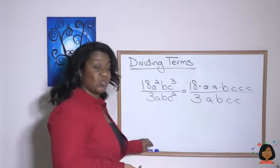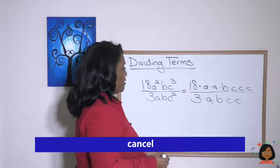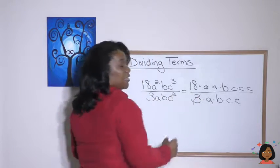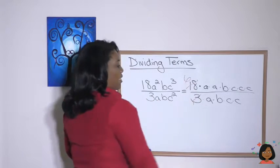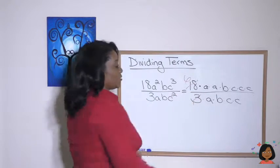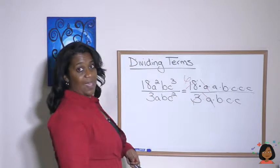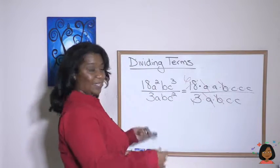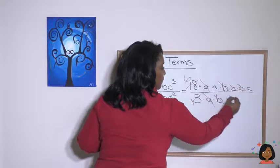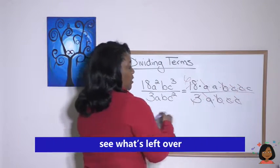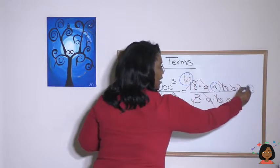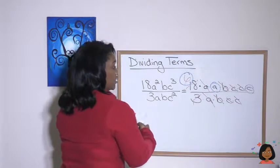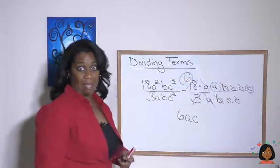Now, like any fraction, we look to see if we can cancel. The 18 and the 3 — 3 goes into 3 one time, 3 goes into 18 six times. Then we see we have an a on the top and an a on the bottom — we can cancel those. We also have a b on top and a b on the bottom — we can cancel that. And we've got two c's we can cancel from the top and from the bottom. What's left over? We have a six, an a, and a c. So to simplify this, this would be 6ac. That simple.